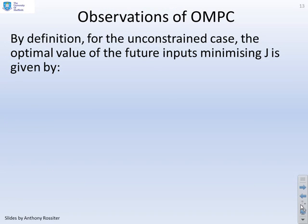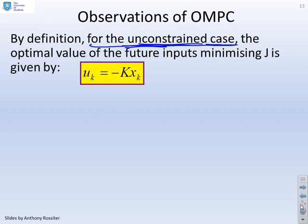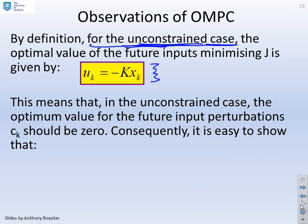Some observations about this OMPC approach. By definition, for the unconstrained case, and that's quite important, the optimal value of the future inputs minimizing J is given by your LQR feedback, u_k equals minus Kx_k. This means that in the unconstrained case, the optimal value for the future input perturbation c_k has to be zero. You might be thinking, this is all a bit bizarre. You've added something which you know to be zero. What's the point? But we'll get to that eventually.